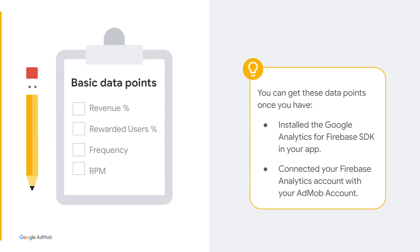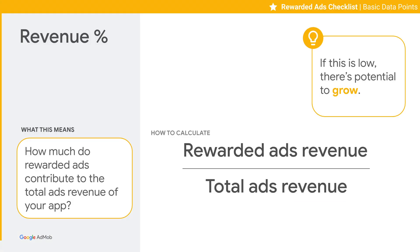Now let's walk through the basic data points. You can automatically get these basic data points from your AdMob account if you link your app with Firebase Analytics. The first basic data point is Revenue Percentage. To calculate it, simply divide Rewarded Ads Revenue over Total Ads Revenue. This metric tells you how much Rewarded Ads contribute to the Total Ads Revenue of your app. If this metric is low, there is potential to grow your app revenue from Rewarded Ads.